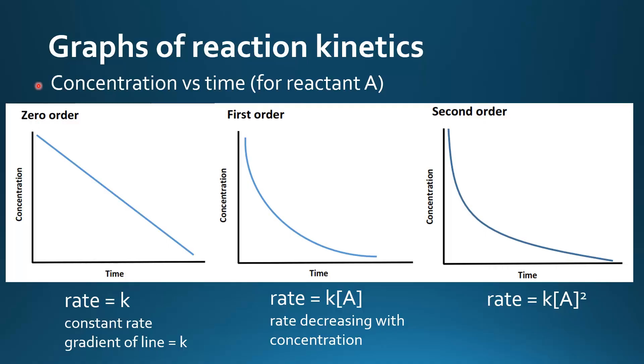So next we have graphs for the concentration versus time. On the y-axis we have concentration, on the x-axis we have time. So for a zero-order reaction, the rate equals K, we have a constant rate, and the gradient of the line equals K.